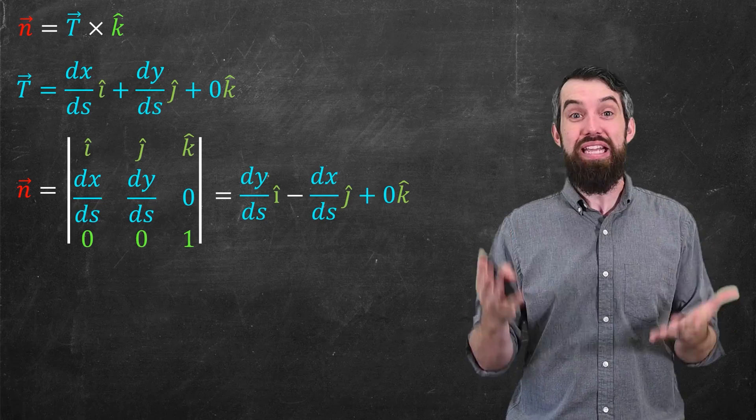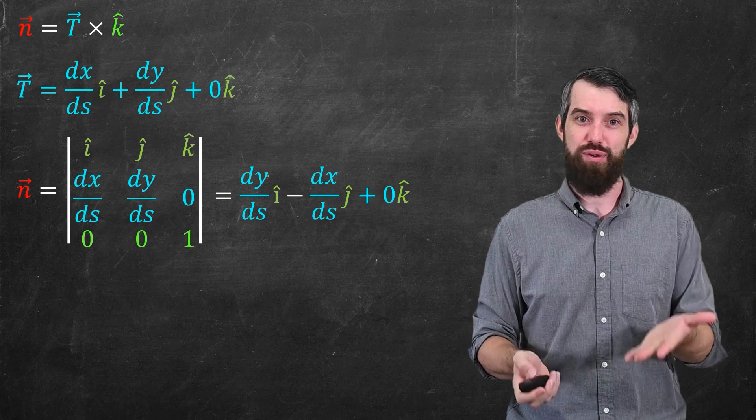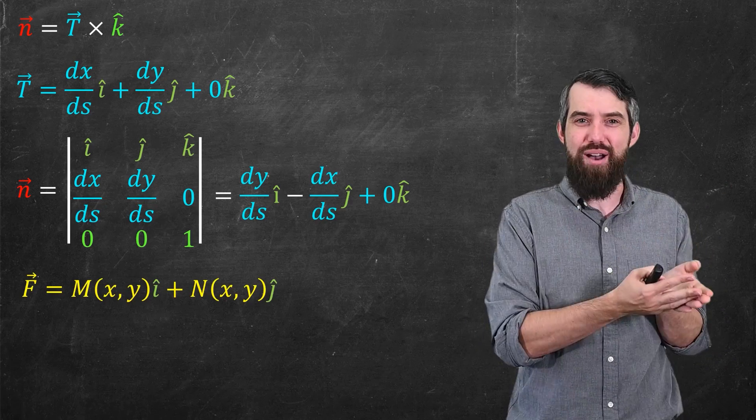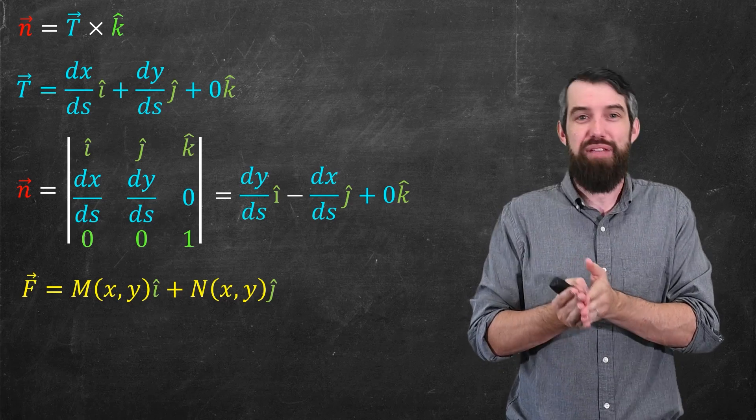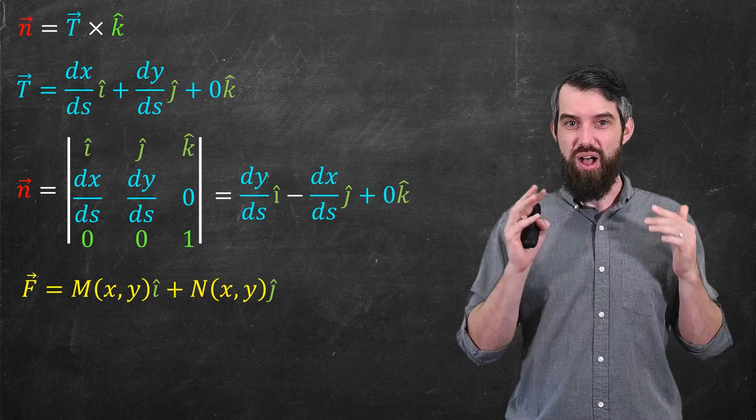All right, so we're done with the need for having a third dimension here. If you want, you can just drop off the zero k-hat for the rest. For example, I'll just talk about my original field f, and I'll just write down its m and its n components. I mean, if you want to, you could write down a zero k-hat as well, but at this point, let's just sort of forget the third dimension.